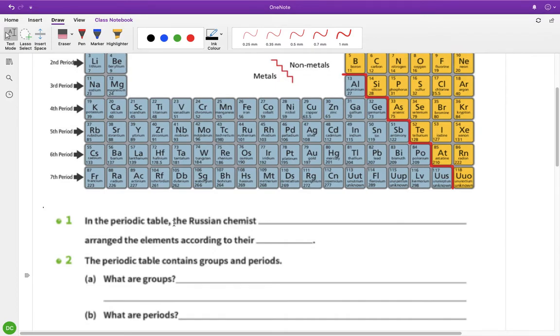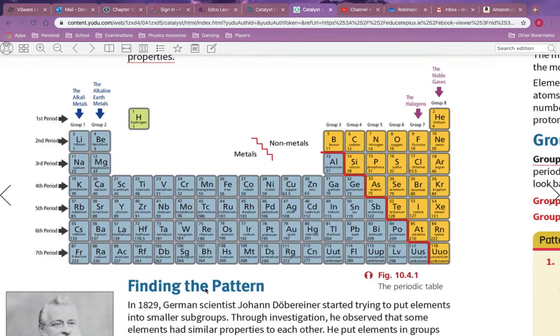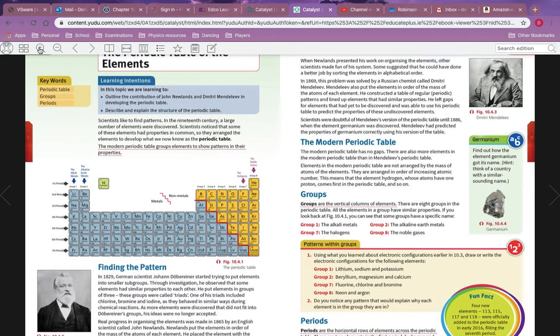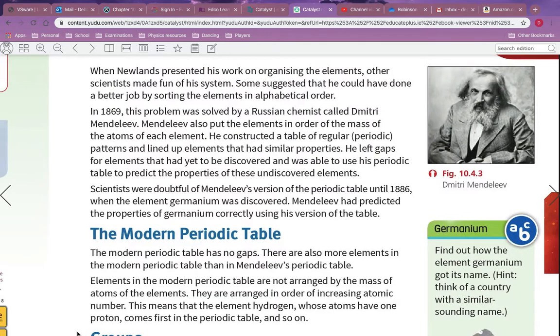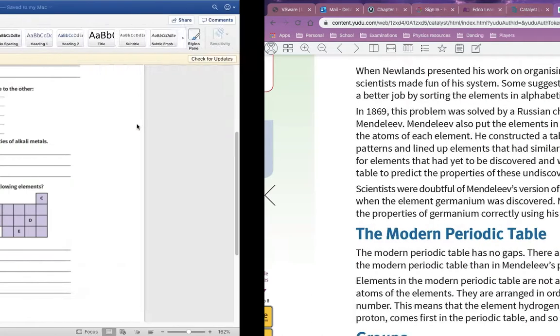In the periodic table, the Russian chemist - where did I put that book? Here it is - so we went through the different scientists and here it is here, Dmitry Mendeleev was the scientist.